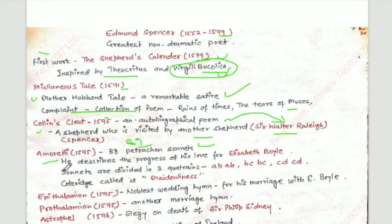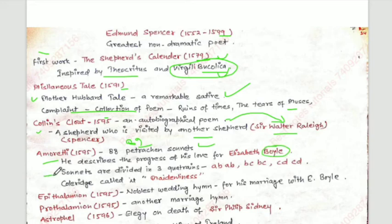In Amoretti, Spenser describes the progress of his love for Elizabeth Boyle. So Spenser is writing about his love for Elizabeth Boyle. The sonnets are divided into three quatrains.